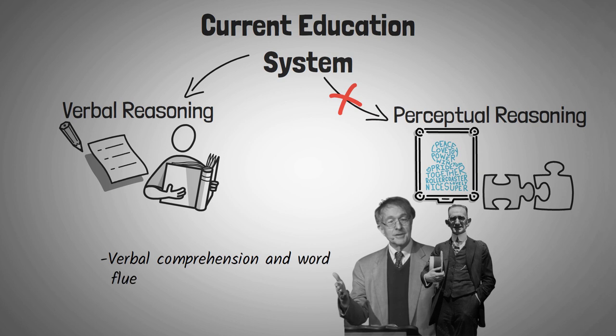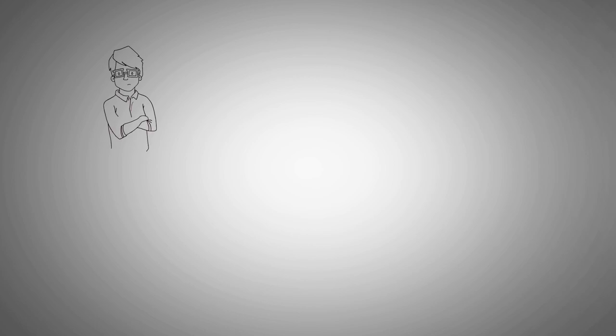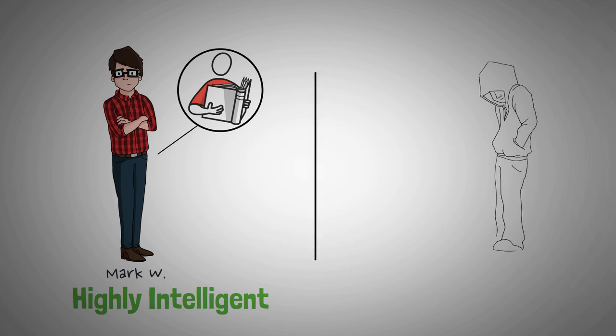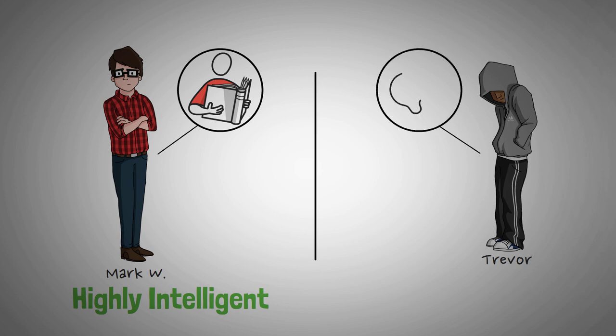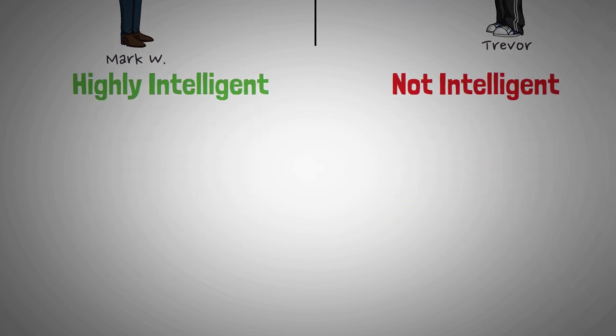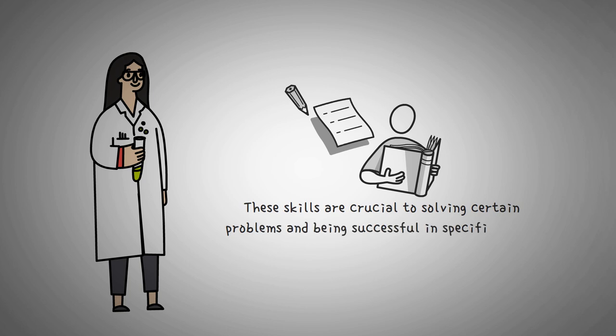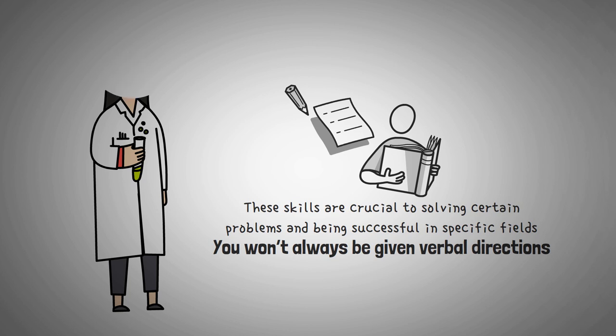With today's testing, a student with high verbal comprehension skills may be considered highly intelligent, even if they have little perceptual reasoning abilities. Conversely, a student with visual and spatial intelligence may not get the same praise or recognition if they suffer on verbal and linguistic tests. But as you heard earlier in the video, these skills are crucial to solving certain problems and being successful in specific fields. You won't always be given verbal directions. There are a lot of problems that you will need to solve by doing them, or through acting.